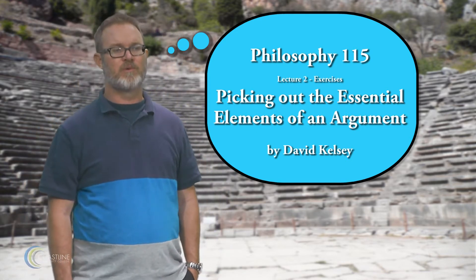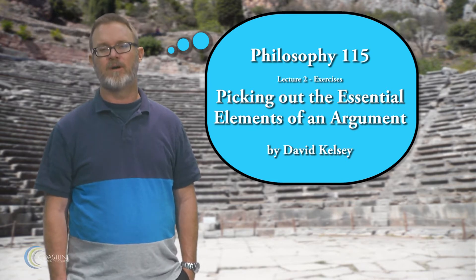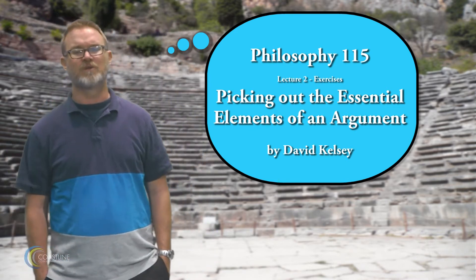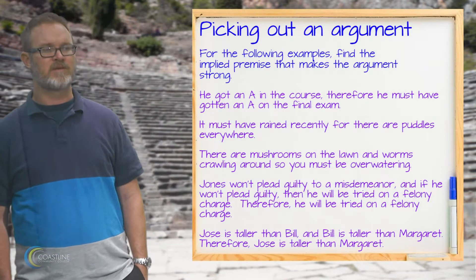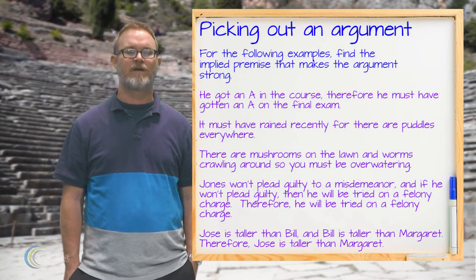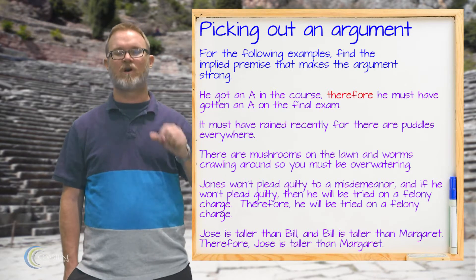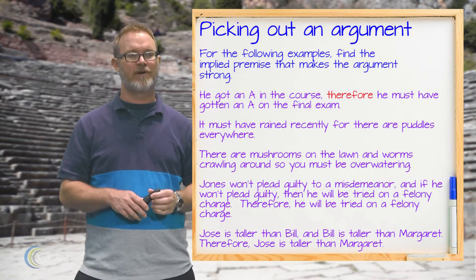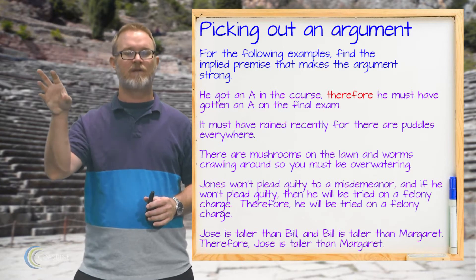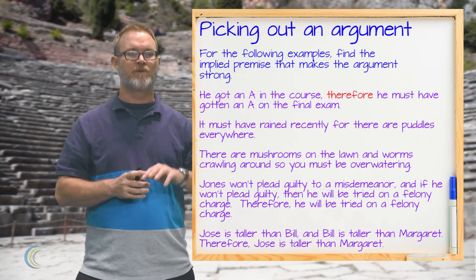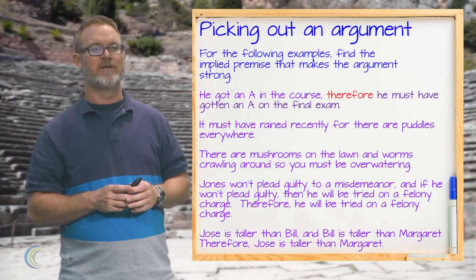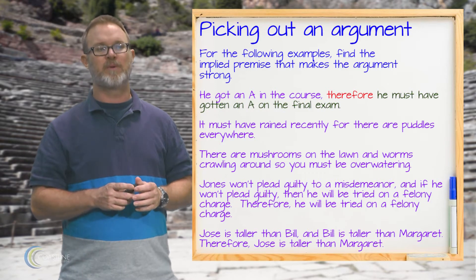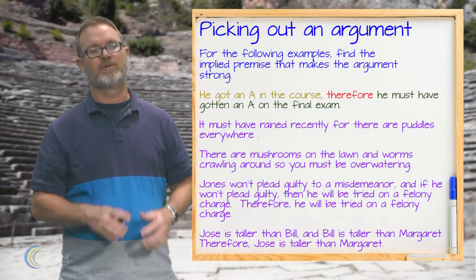This first set of examples, what we're trying to do is determine what the premise or premises and the conclusion of the argument are. The first exercise says: he got an A in the course, therefore he must have gotten an A on the final exam. The word 'therefore' is always a conclusion indicator — what follows it is the conclusion, and what precedes it is the premise. So here our conclusion is that he must have gotten an A on the final exam, and the premise is that he got an A in the course.